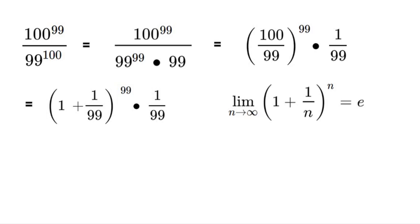Now if we compare our two equations here, we can see that on the left side of our problem we have 1 plus 1 over 99 to the power of 99. Since both numbers are 99 where the n's would be, we can apply this limit to our problem.